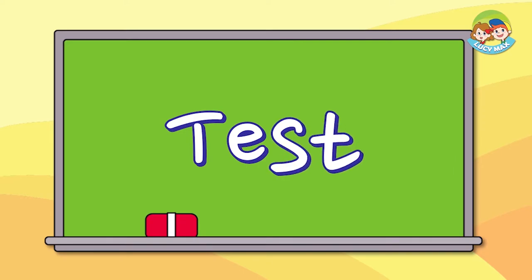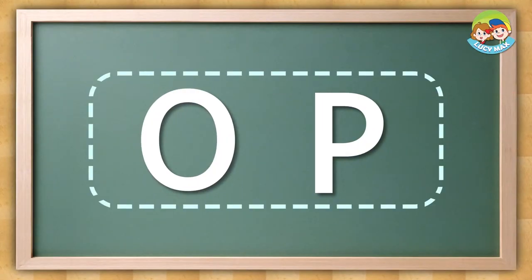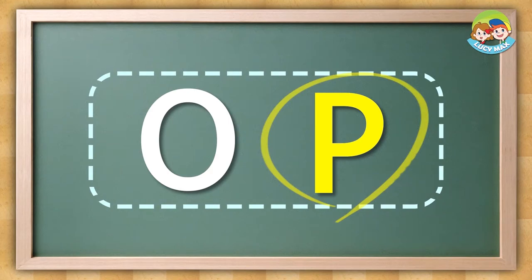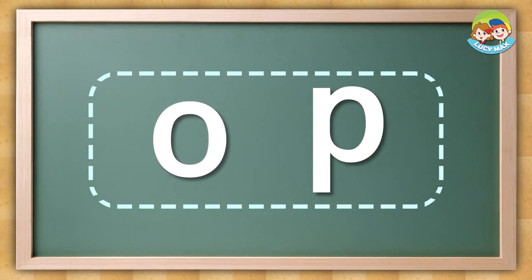Now we have a test. You have to listen and choose the sound you hear. When you hear the word, listen for the beginning sound — 'aw' or 'p'. Listen for the beginning sound and choose the letter. P, p, piano. The answer is this. O, o, ox.